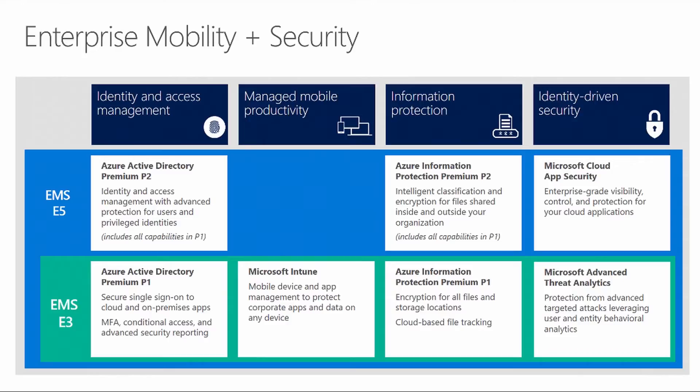The E5 suite builds upon each different pillar in EMS and provides more of a premium feature set. EMS E5 includes Azure Active Directory Premium P2, which gives identity and access management features above and beyond P1, Azure Information Protection P2, which automates classification, and Microsoft Cloud App Security. EMS is really designed as a full suite of products that integrate, so looking at one isn't necessarily going to give you all the features and benefits versus how tightly integrated they are.